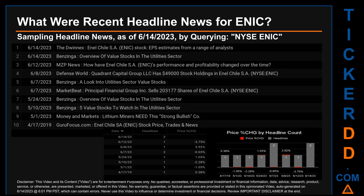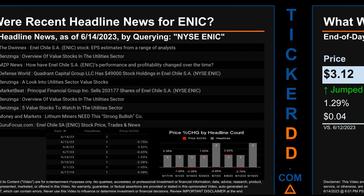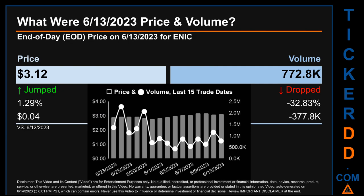I have not yet received pricing data for that day, so cannot calculate the day's percentage change in price. The latest publication date of Wednesday, June 14, 2023 was actually the day with the highest percentage change in price — it saw a price jump of 3.92%. Monday, June 12, 2023 was the day with the highest percentage change in price when comparing opening versus closing price, seeing a drop of minus 3.75%, when ENIC opened trading at $3.20 and closed at $3.08. There was one found headline, when MZP News published: 'How Have Enel Chile SA ENIC's Performance and Profitability Changed Over Time?'